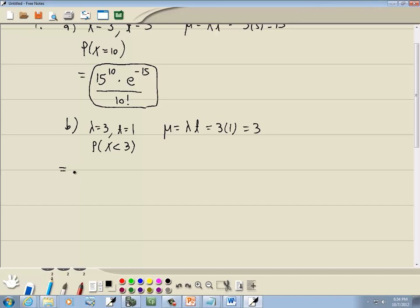And probability that X is less than 3 is X is equal to 0, X is equal to 1, and X is equal to 2. Less than 3 means it doesn't include 3. So I'm going to do the formula 3 times.